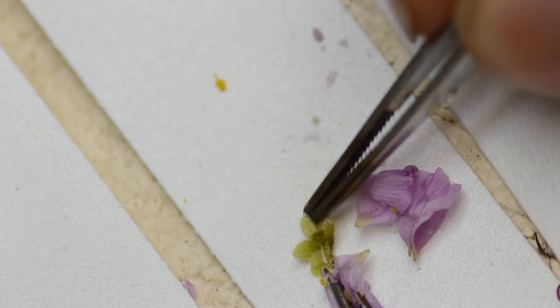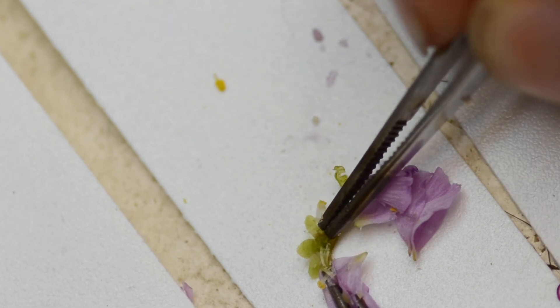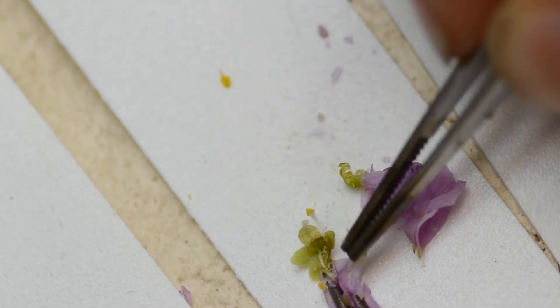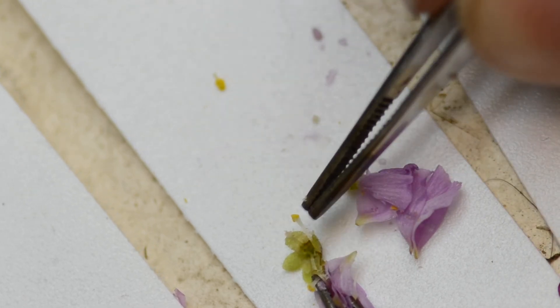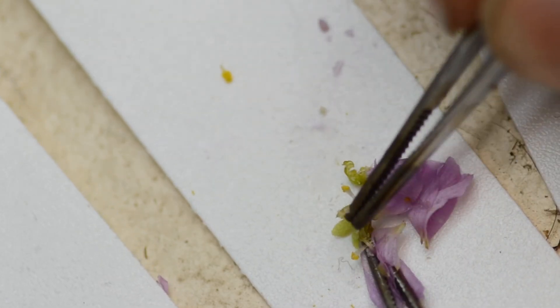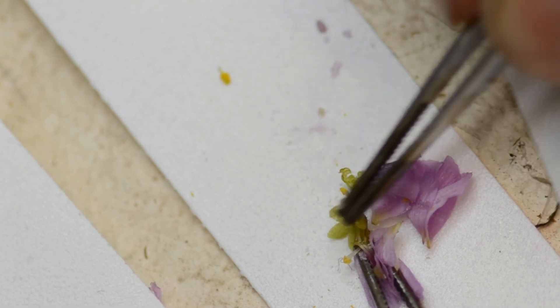So the plated region beneath the ovaries is the receptacle right here. It's kind of like where the ovaries connect onto the stalk almost above the sepals.